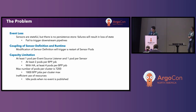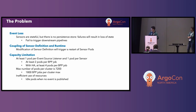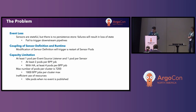Another challenge we were facing was that in our organization, there is a limit on the number of pods available within a Kubernetes cluster. Because every pipeline corresponds to one sensor specification, we were only able to support 1,800 pipelines within a cluster. This also resulted in some inefficient use of pod resources, because some pipelines run more frequently than others — meaning some pods are much busier than others while others sit idle most of the time.